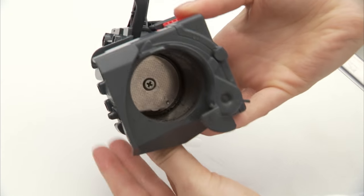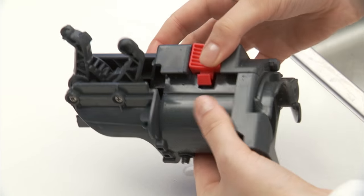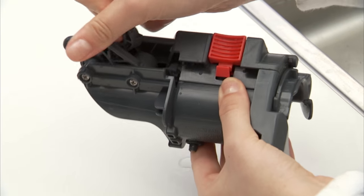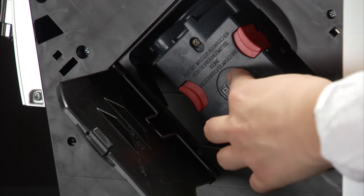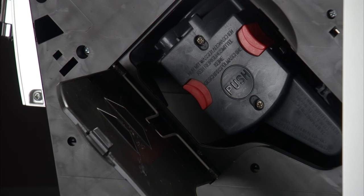If the infuser is difficult to insert, before insertion squeeze the two levers to make it smaller. Once inserted, make sure the two red buttons have snapped out.